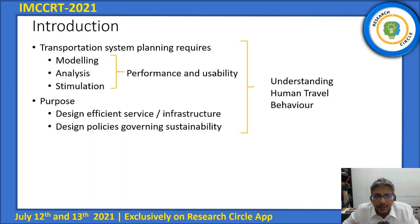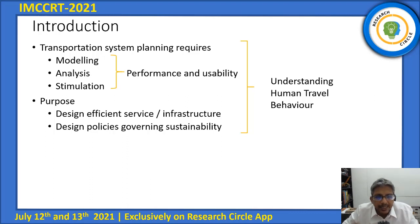To understand human travel behavior, it is important to have knowledge on transportation system and its purpose. In transportation system planning, it requires three categories: modeling, analysis, and simulation, in order to achieve high performance and usability. The purpose of studying this is to design effective services and infrastructure, and to design policies governing sustainability in urban cities.